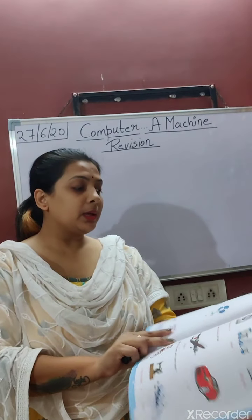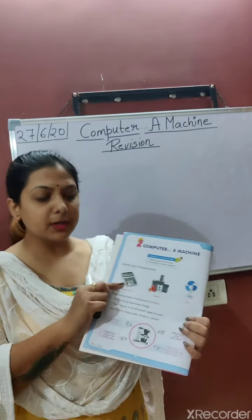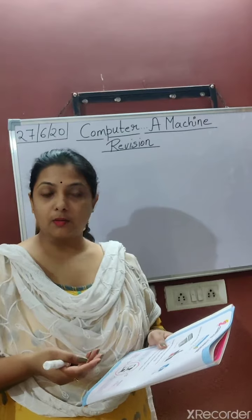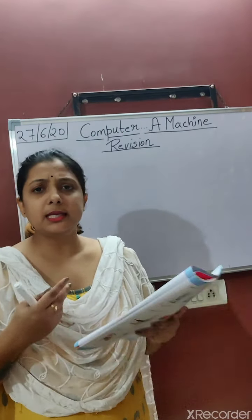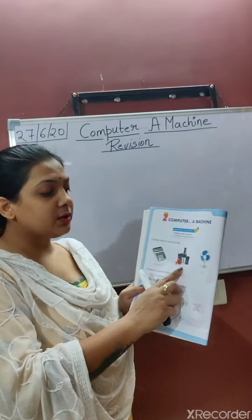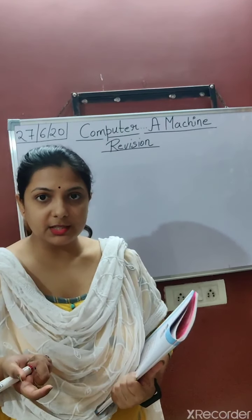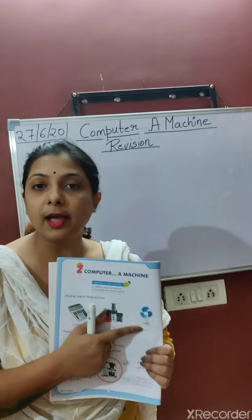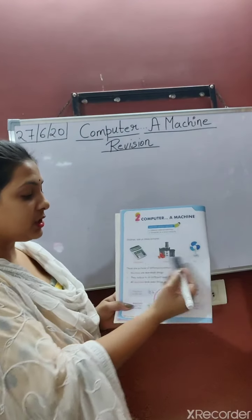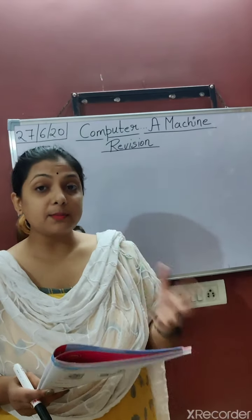As you can see, there are three pictures in your book. The first picture is of a calculator — we can easily do addition, subtraction, multiplication, or division on it. The second picture is of a juicer, which many of you know about. The third picture is of a fan. So these are pictures of different machines.